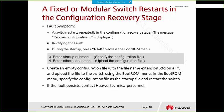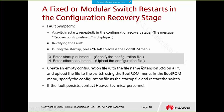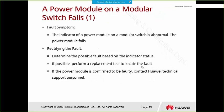If a fixed or modular switch restarts during the configuration recovery stage — not before, but in this stage — enter the boot ROM menu. Create an empty configuration file with a filename ending in .cfg on a PC, upload the file to the switch using the boot ROM menu, specify it as the startup configuration file, and restart the switch. If the fault still persists after this, contact Huawei support to solve the problem.